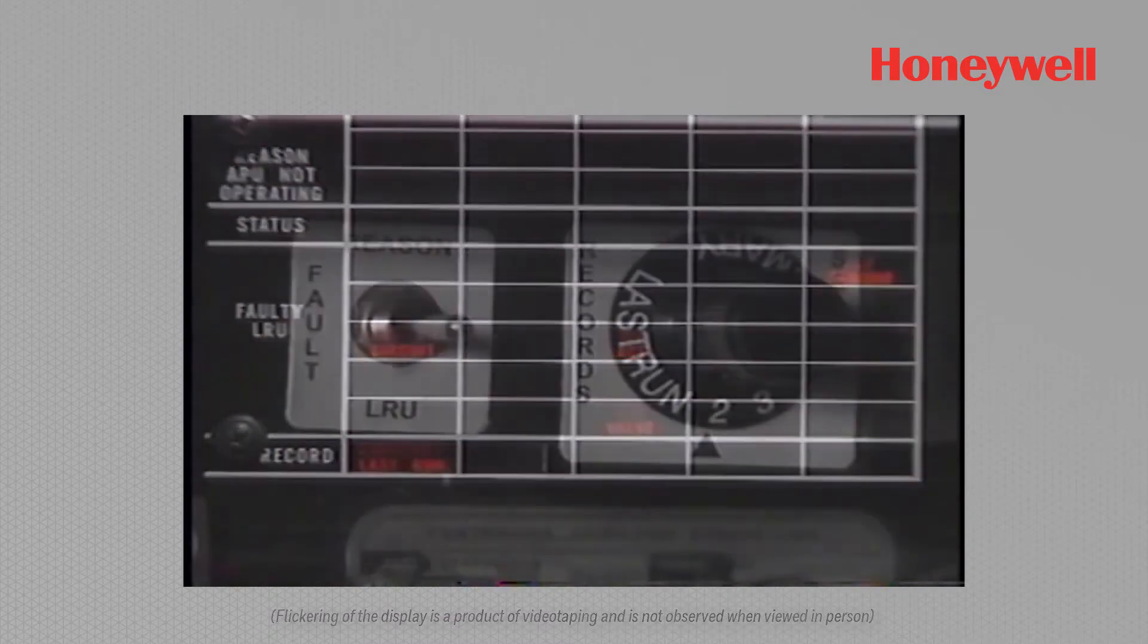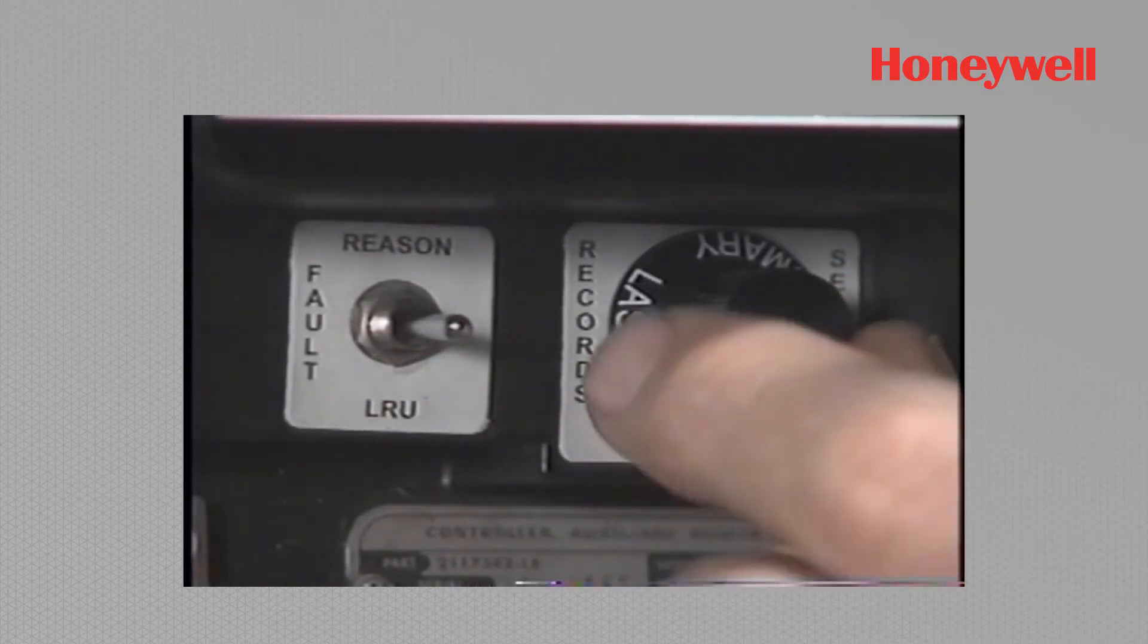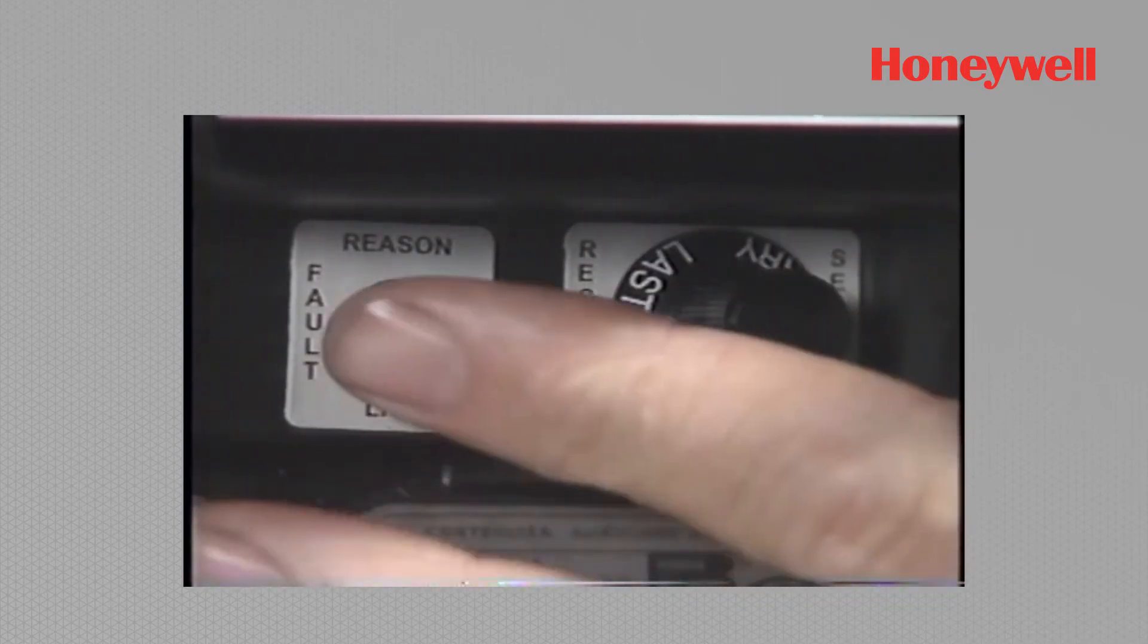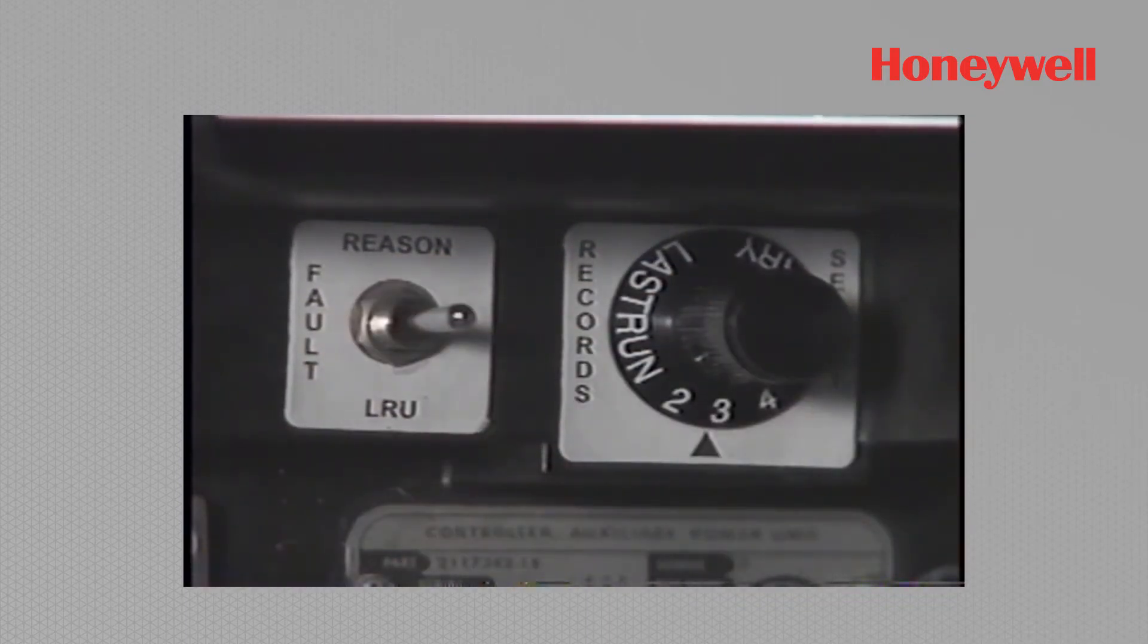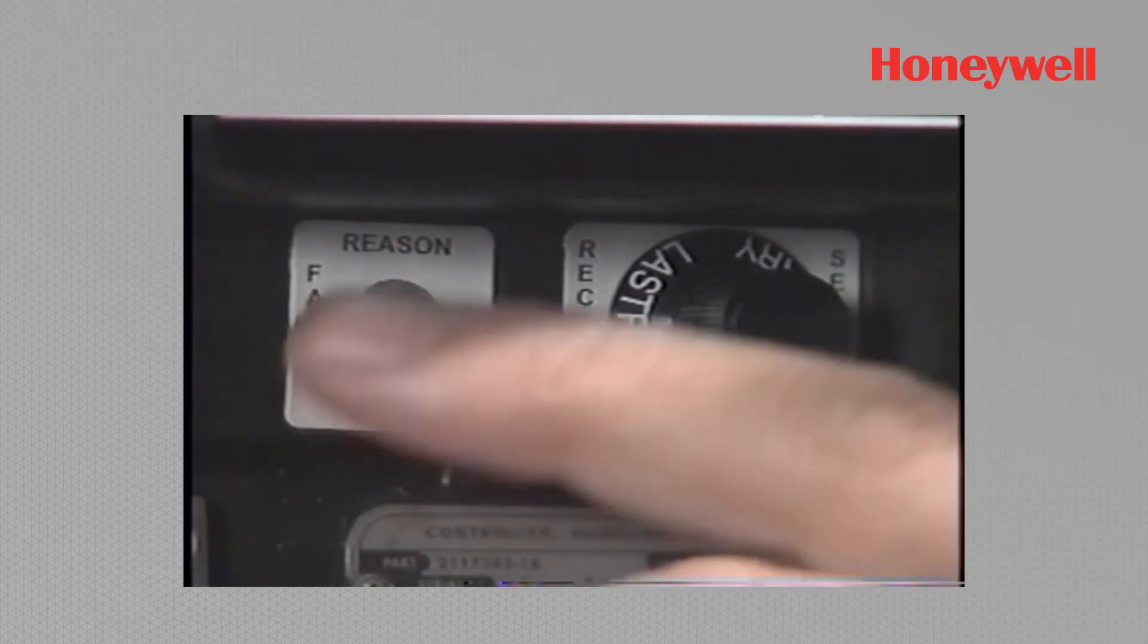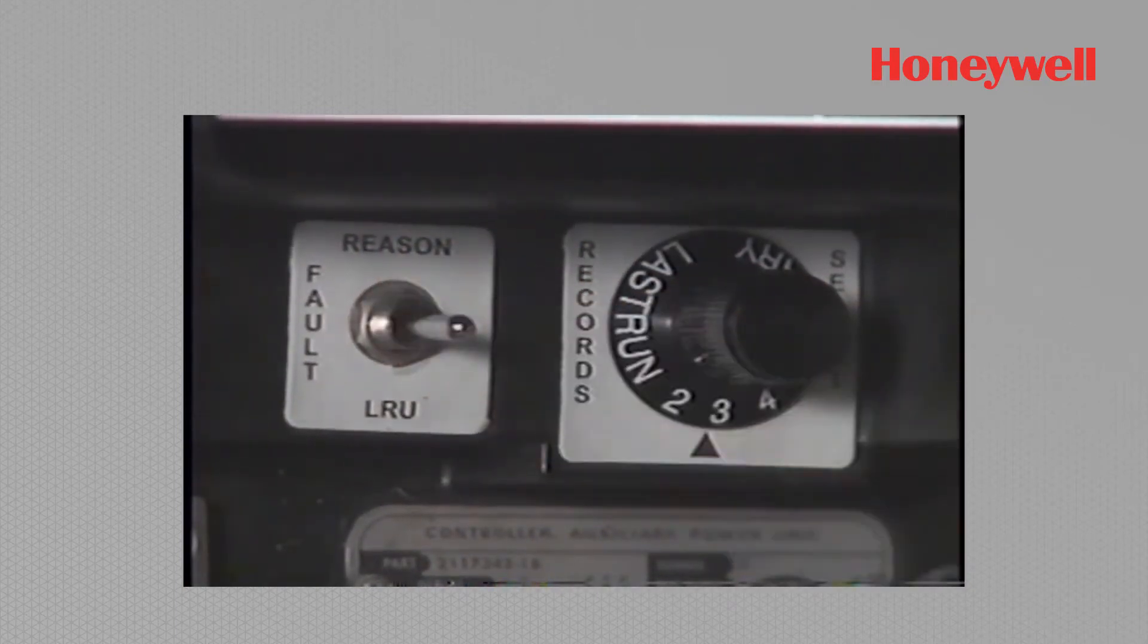To interrogate information in record select positions shutdown 2, 3, or 4, rotate the record select switch to the desired position and toggle the fault switch to reason or LRU.